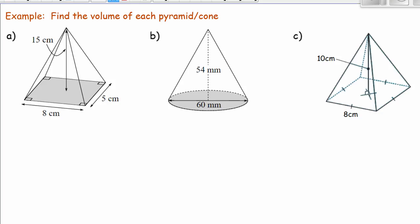Let's look at some examples on how to apply these formulas. Find the volume of each pyramid or cone. Here you can see the base — I'm going to start by identifying the base for each shape. What we have to do is find the area of the base, multiply it by the height, and then divide by 3.